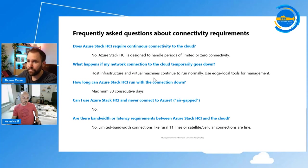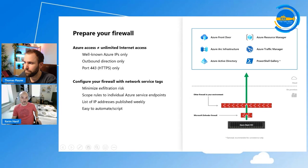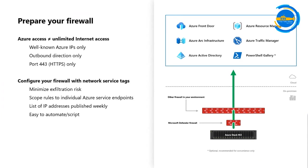That begs the question: what do I need to do on my firewall? Having access to Azure is very different than unlimited internet access — we just need to give access to Azure. What we need is one-way, outbound-only access over secure port 443 HTTPS, to well-known and weekly-published Azure IP addresses. And we are part of that. On the right-hand side you can see the endpoints we need: there are six of them — Front Door, Azure Resource Manager, Arc infrastructure, Azure Traffic Manager, Azure Active Directory, and optionally the PowerShell Gallery.